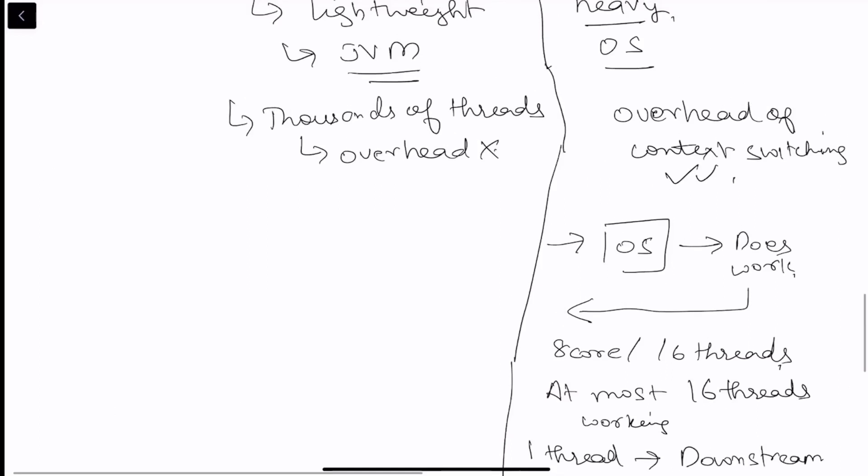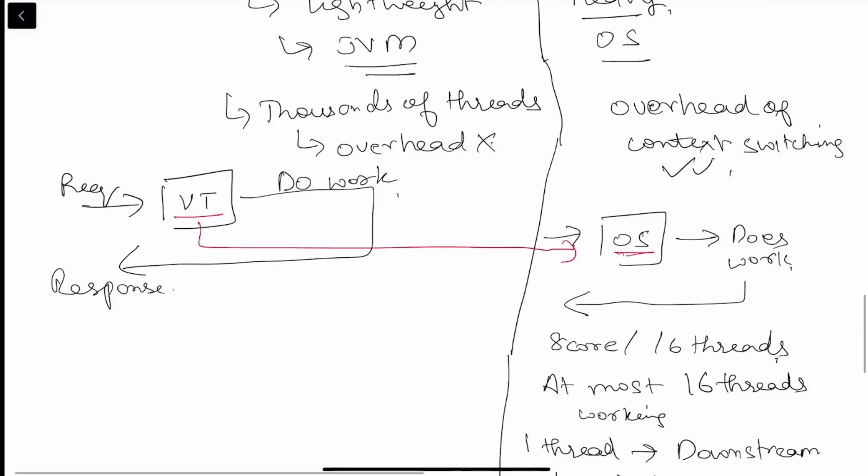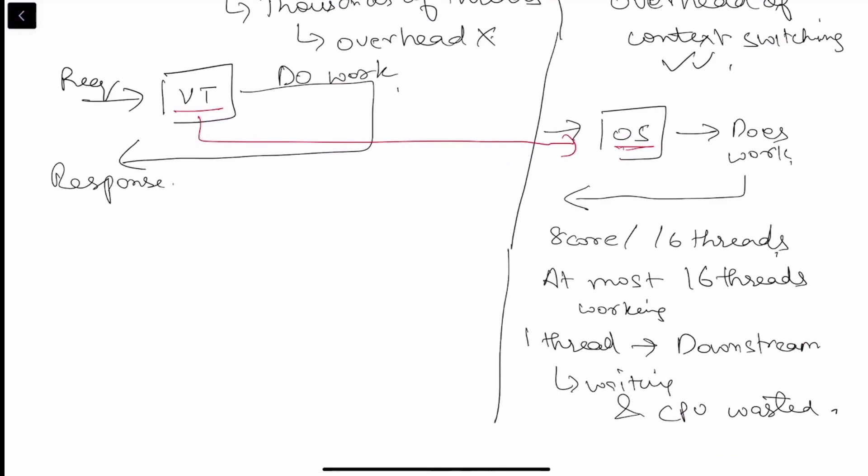But with the introduction of the virtual threads what happens is that whenever a request comes in the JVM would actually spin up a virtual thread. And this virtual thread would do the work. And send back the response. Now this seems as similar to the traditional model only. But what is the difference over here. Let's try to see this with an example. What happens is that in the virtual thread since as we saw we can spin thousands and millions of virtual threads. If it is doing some work and it's in the block state. So let's say this virtual thread is in the block state. And we have 4 virtual threads 1, 2, 3, 4. And one of them is in the block state.